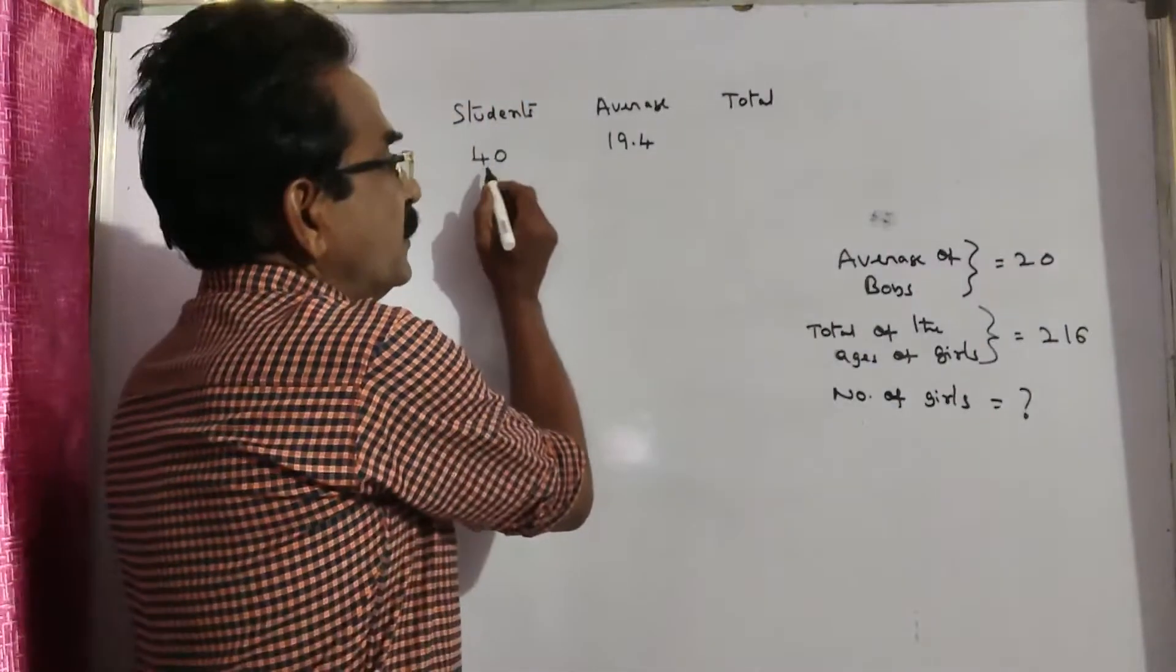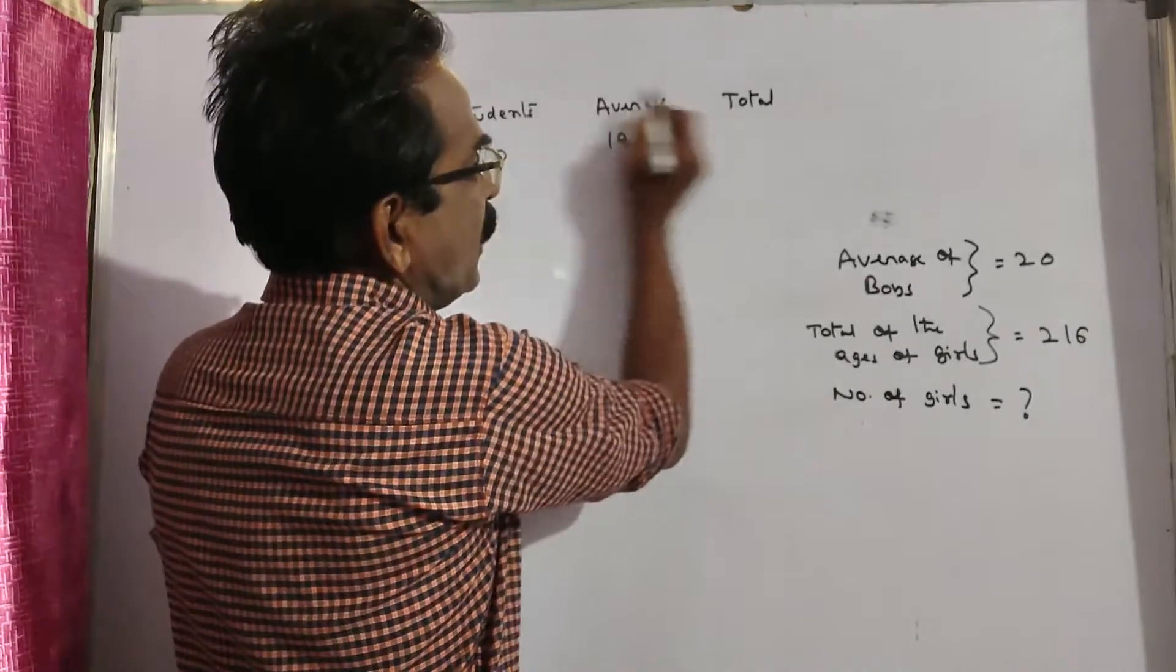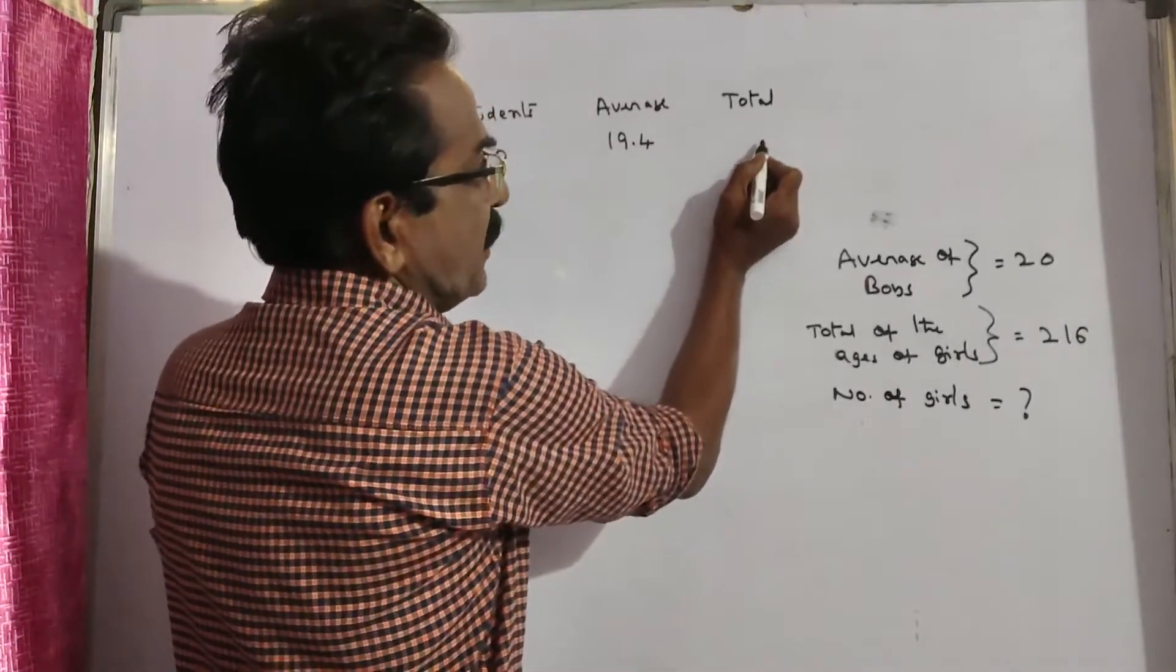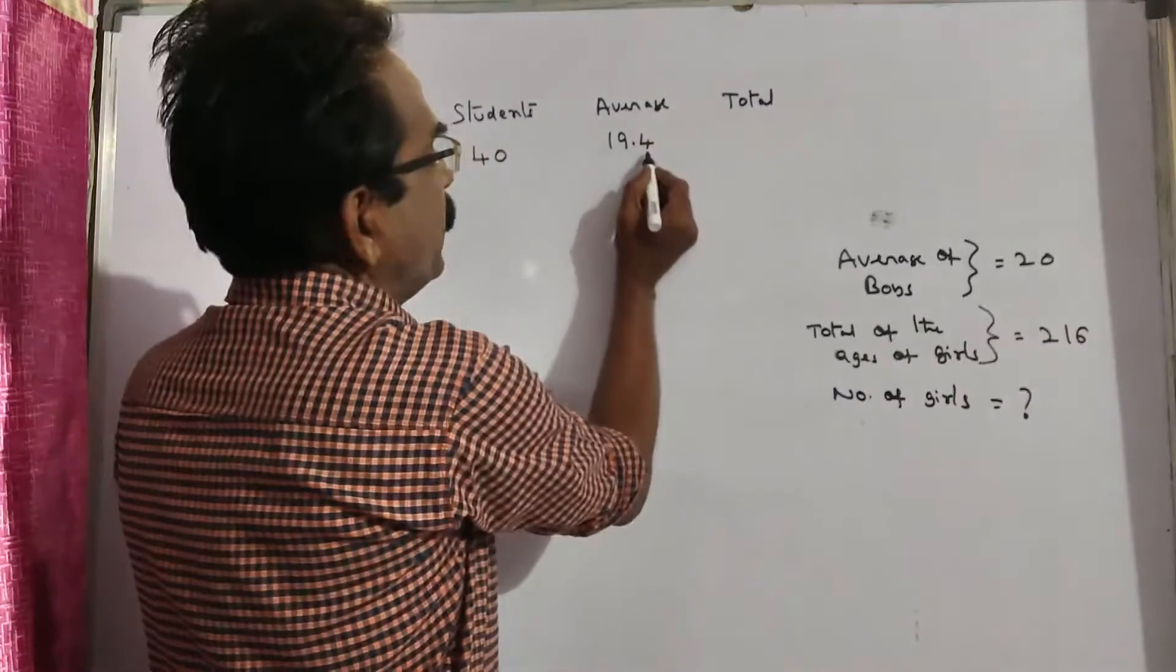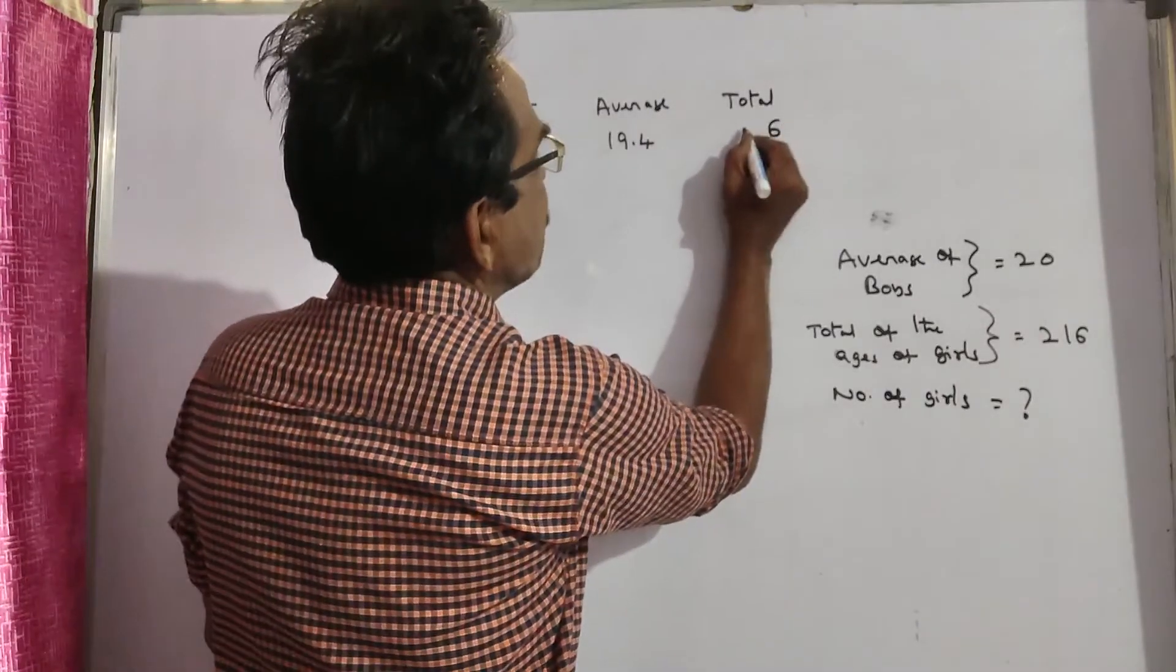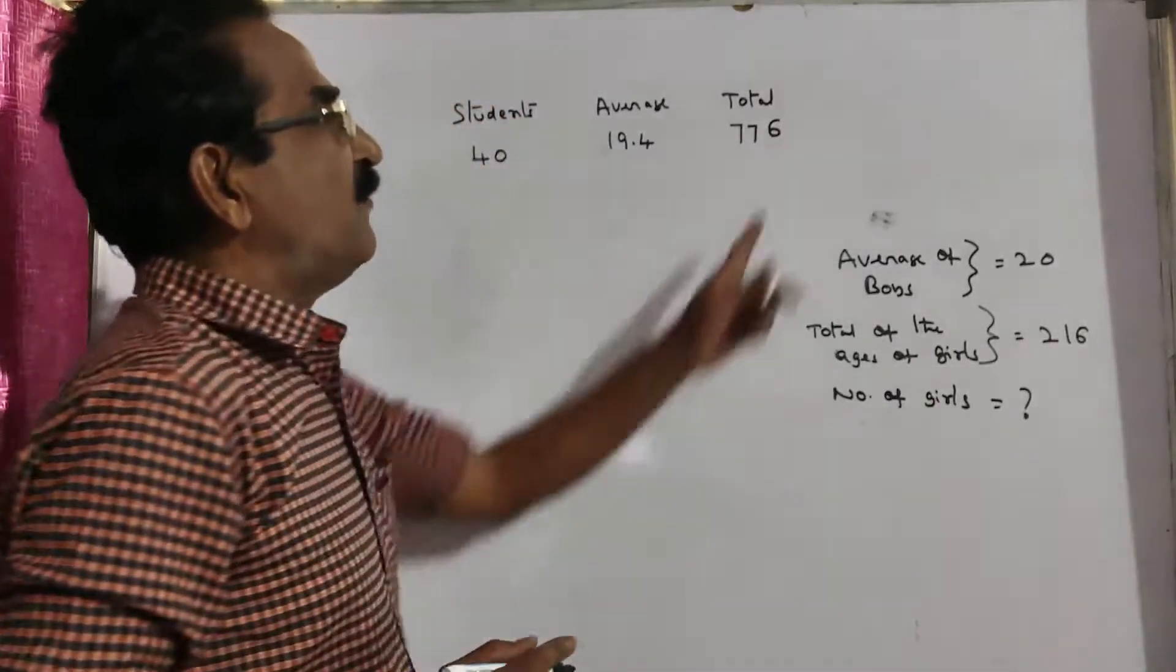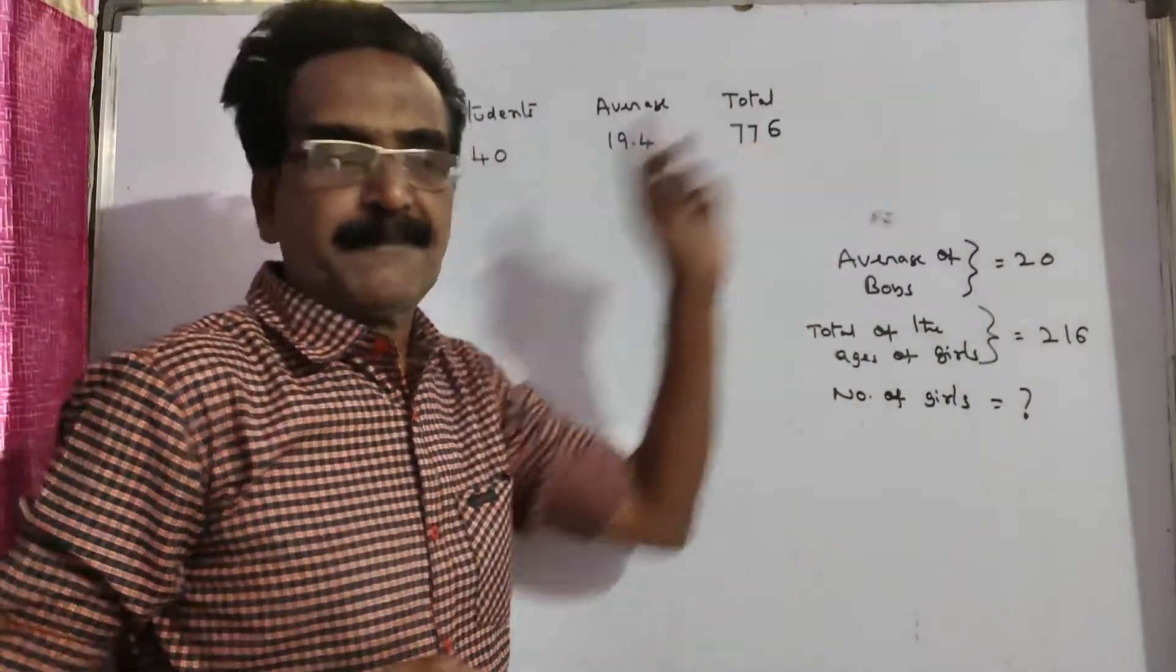Friends, the average of 40 students is 19.4. So the sum, that is total of all these students, is 40 times 19.4, which equals 776. So this is total of all the students, that is boys plus girls.